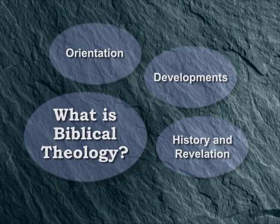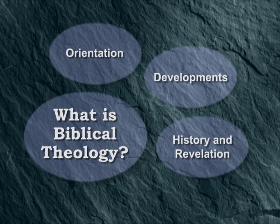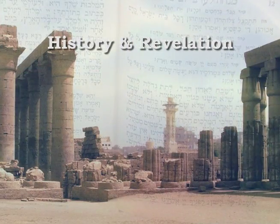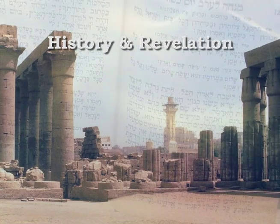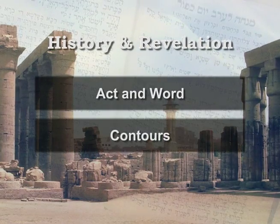Now that we have seen how contemporary evangelical biblical theology focuses on the history of redemption as the centerpiece of Scripture, we're in a position to turn to our third main topic — how evangelical biblical theologians understand the relationship between history and revelation. Hardly any two concepts are more central to biblical theology than history and revelation. Biblical theology concentrates on history as the unifying thread of all of Scripture, and one reason for this focus is the understanding that in Scripture, God's revelation of himself is deeply tied to historical events.